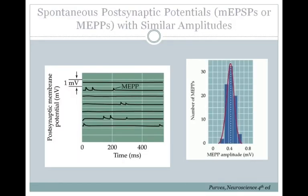In addition to the evoked release of neurotransmitter — where you generate an action potential on your presynaptic neuron and cause the release of neurotransmitter from synaptic vesicles — people also noticed spontaneous release of neurotransmitter. These are called mini EPSPs, or mini end plate potentials if it happens on a muscle. They represent the spontaneous release of a single vesicle of neurotransmitter. They all have around the same amplitude, approximately 0.4 millivolts, as quantified in a histogram. This spontaneous release is caused by spontaneous binding of calcium with synaptotagmin and the release of one vesicle, showing that each vesicle is filled with about the same amount of neurotransmitter.